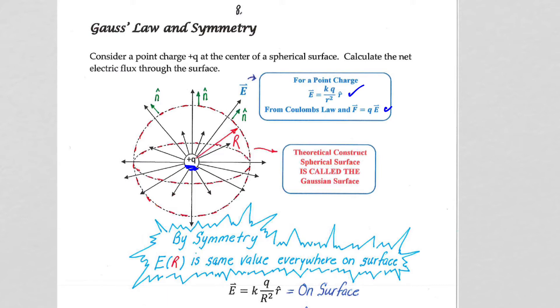Our spherical surface is going to sit symmetrically around that point charge plus Q. And that spherical surface doesn't have to be there. That's why that spherical surface, it says over here, is a theoretical construct.